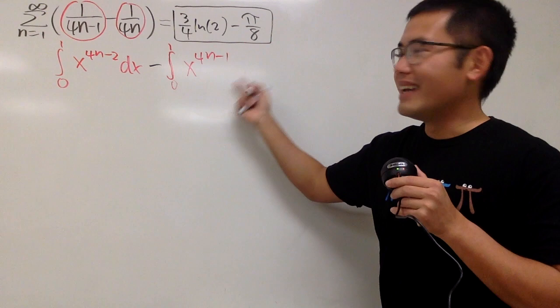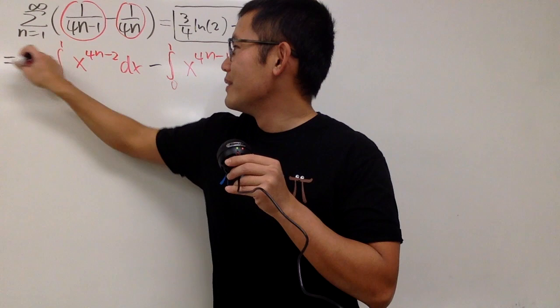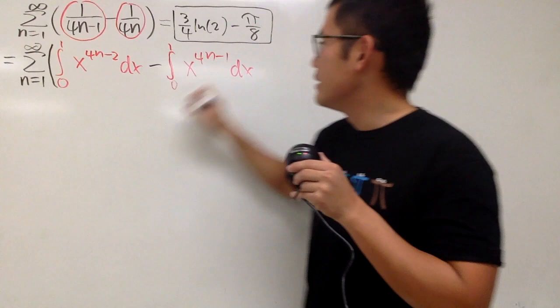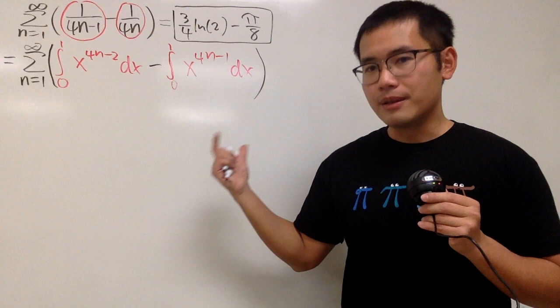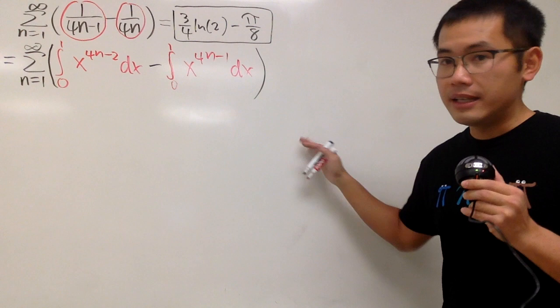Now we have the integrals in the summation. So let's go ahead and put down the summation from 1 to infinity with everything inside. Here is the deal: sometimes we can switch the order of integration and also the summation. In his book, Daily Math talks about when you can actually do that — it's called the Dominant Convergence Theorem. He also gives an example of when you cannot do so. But in this case, I will tell you we can actually switch it, and that will be really nice.